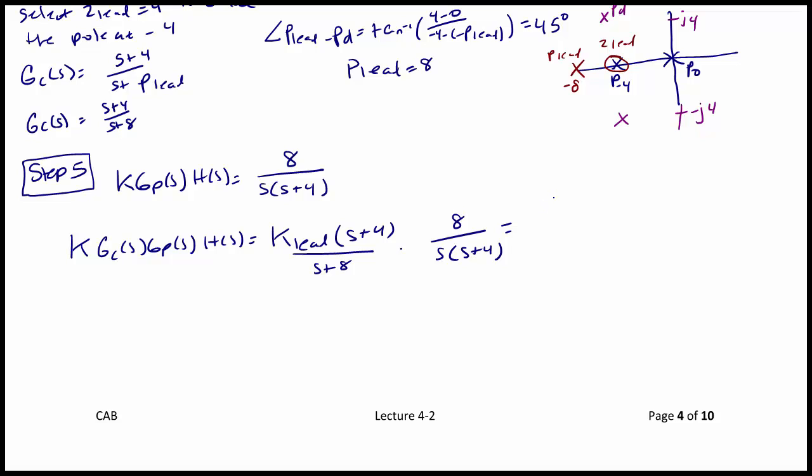So this leaves us with K lead times 8 divided by S times S plus 8. And we use our angle criterion in order to solve for K lead. So we have that the magnitude of 8K lead over S times S plus 8, that magnitude should equal 1 when S is equal to negative 4 plus J4.